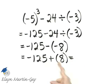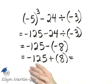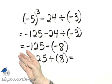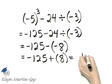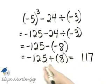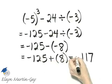And then negative 125 plus 8. I'm adding two numbers with different signs. I subtract their absolute values: 125 minus 8 is 117, and I keep the sign of the number with the larger absolute value, which is negative 125. The result is negative 117.